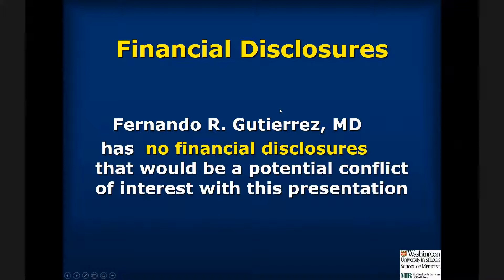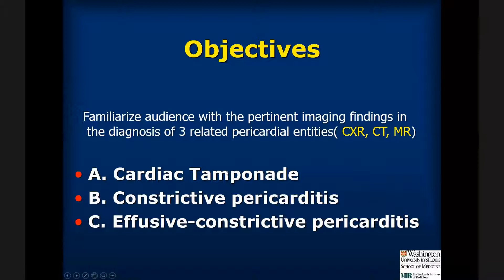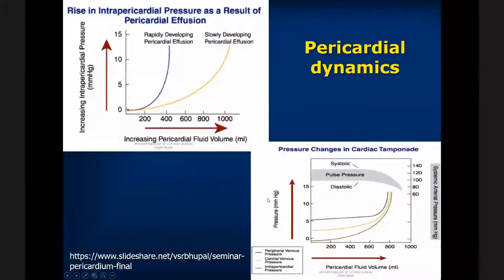I have no financial disclosures. The objectives of my talk are, number one, to talk about tamponade and pericarditis and the physiology and the findings that we see mostly on computer tomography but also MRI and occasionally on plain radiographs. I'm also going to spend a couple of minutes talking about effusive constrictive pericarditis, which is a condition that can happen in between the two other situations.